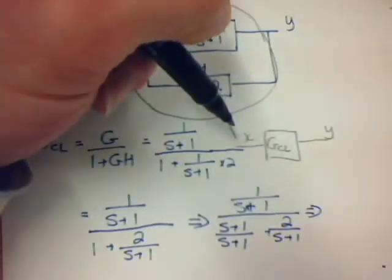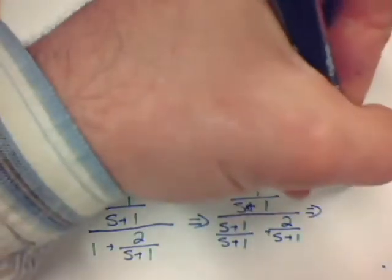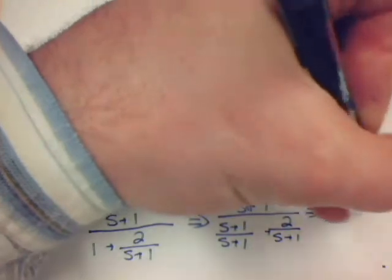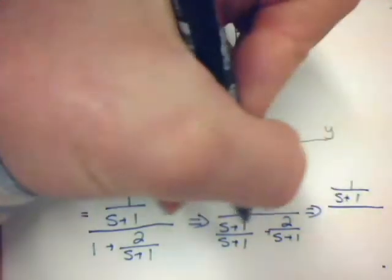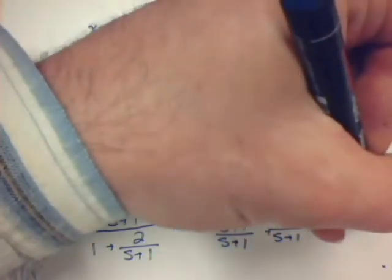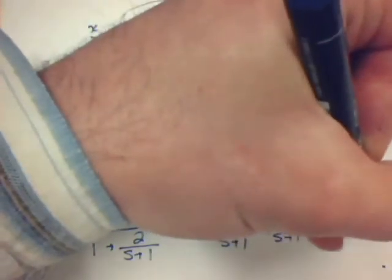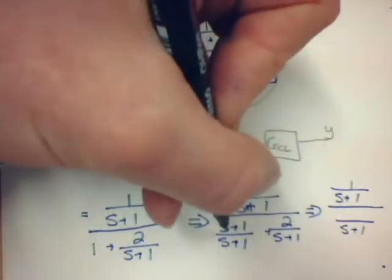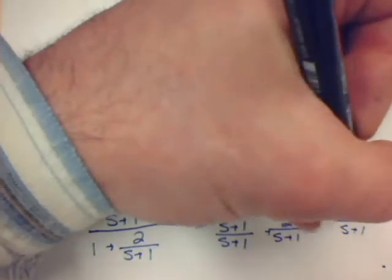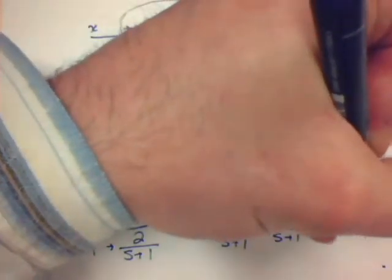It's quite easy to see that I can then say 1 over S plus 1, all divided by—we've got a common denominator here—S plus 1. And S plus 1 plus 2 will be S plus 3.